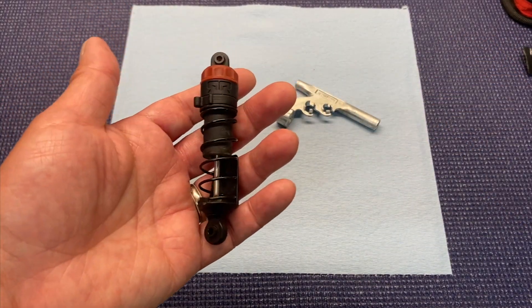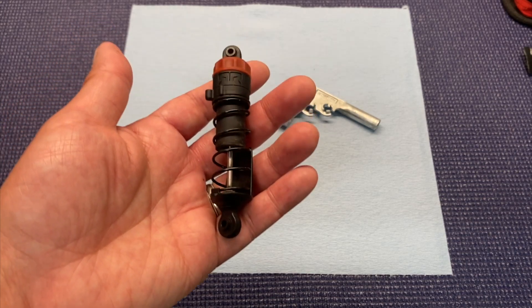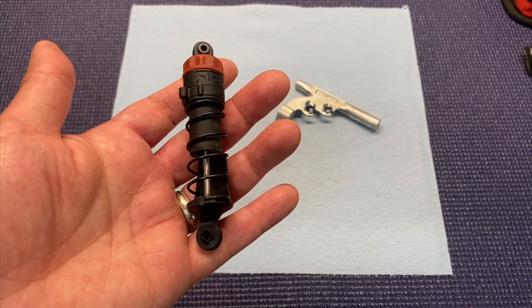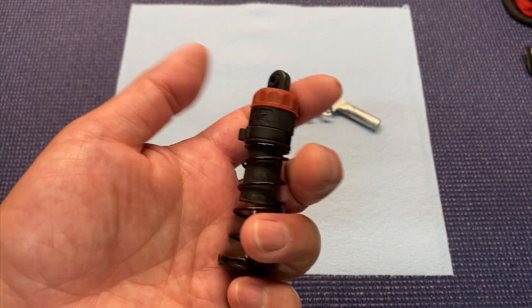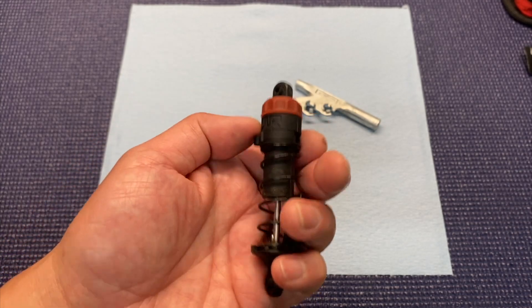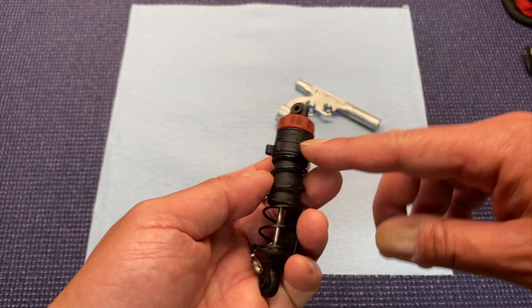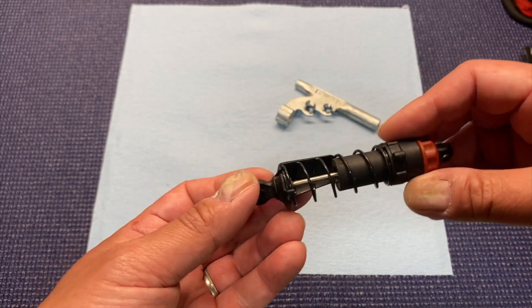One neat thing with the new Vortex is they did redesign the shocks, so they are similar to the old 3S V3 shocks, but there are some changes. It's got the standard black little cap, not really a cap, just kind of a screw-on top piece, some spacers, and then the springs.